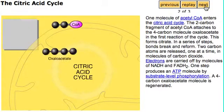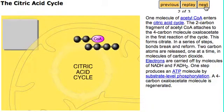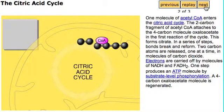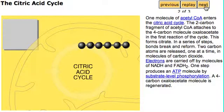One molecule of acetyl CoA enters the citric acid cycle. The 2-carbon fragment of acetyl CoA attaches to the 4-carbon molecule oxaloacetate in the first reaction of the cycle. This forms citrate.